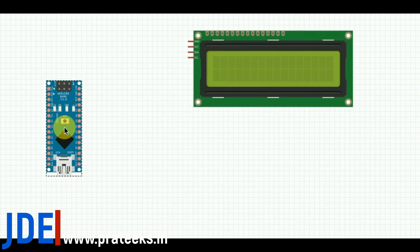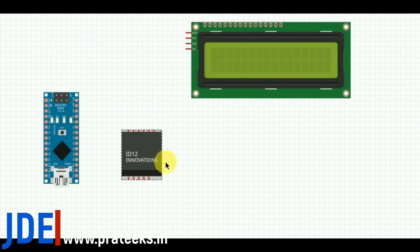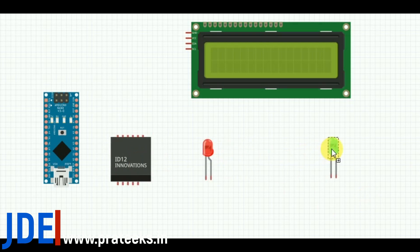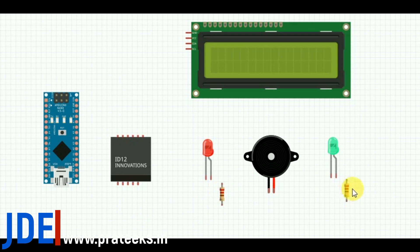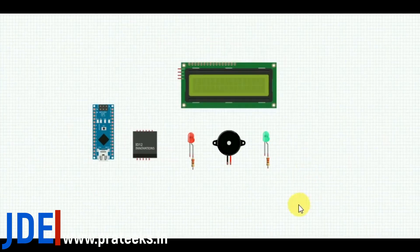Here is the circuit diagram. To make this project, first arrange all the components: Arduino, LED, LCD, RFID, and buzzer, and use 20k ohm resistors. The final circuit diagram is given in the video description if you need it.